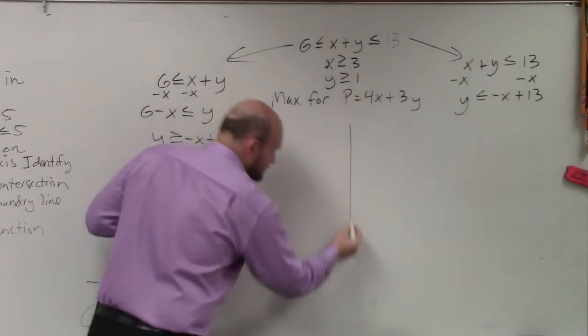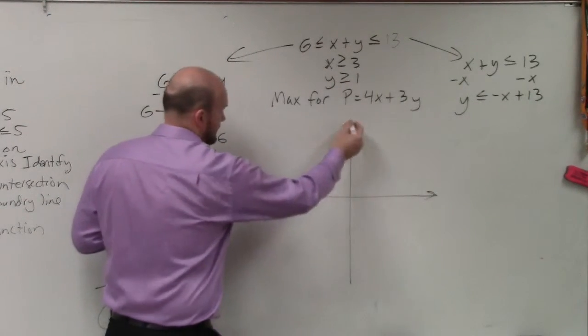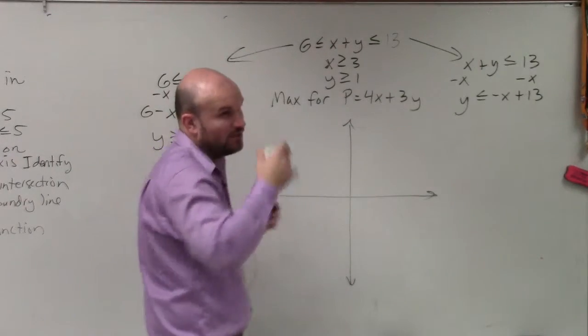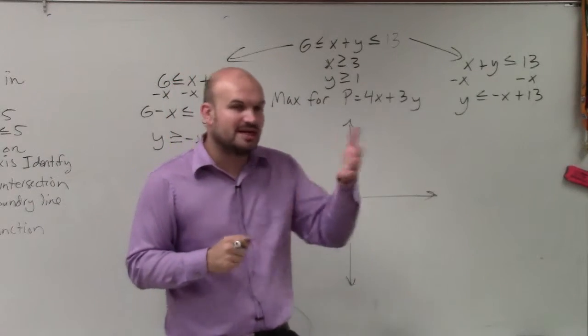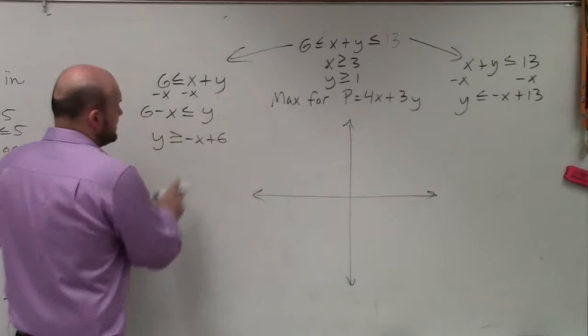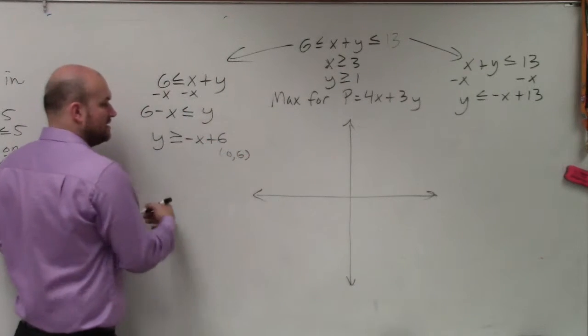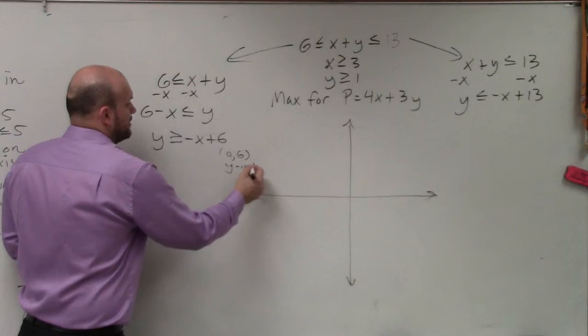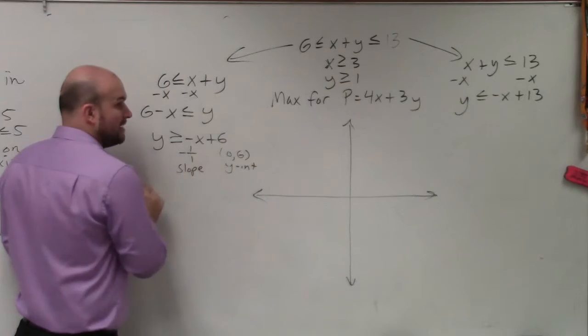When we're looking up here, remember graphing, ladies and gentlemen, the reason why I like writing them in slope-intercept form is so we can identify the y-intercept and identify the slope. In this example, my y-intercept is the coordinate point 0, 6. And my slope is the fraction negative 1 over 1.